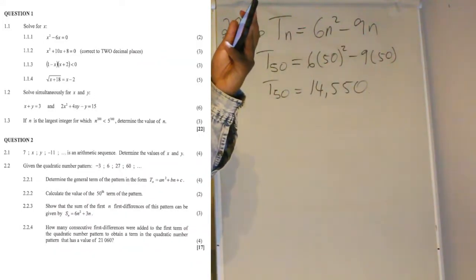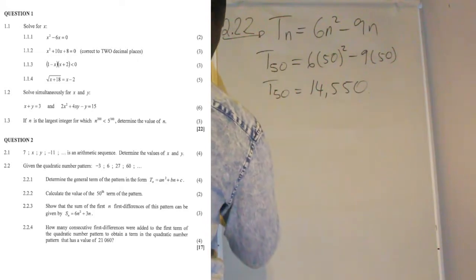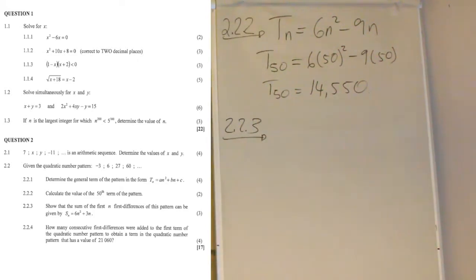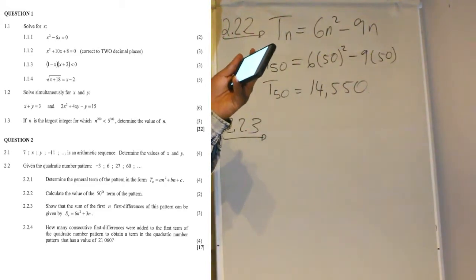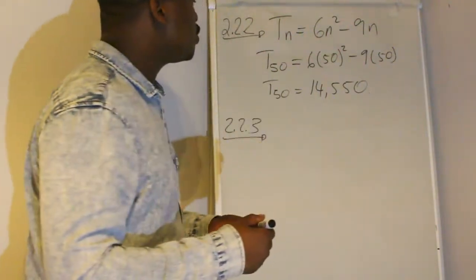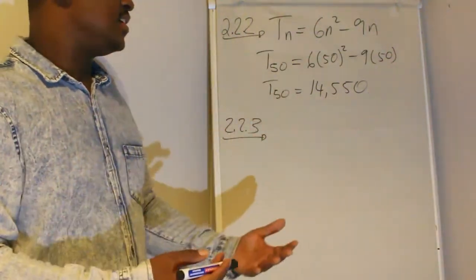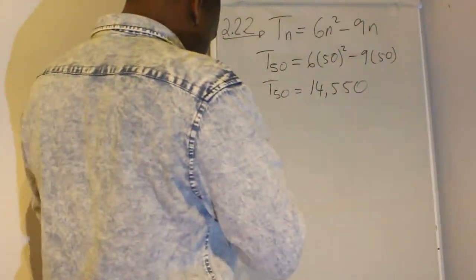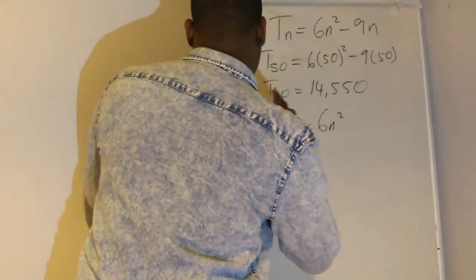We are going to question 2.2.3. Show that the sum of the first n first differences of this pattern can be given by this sum. They are saying that Sn is equal to 6n squared plus 3n.